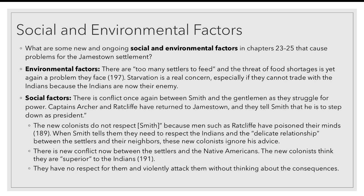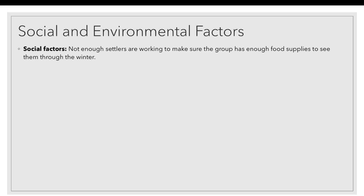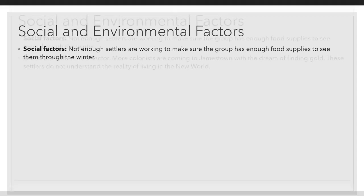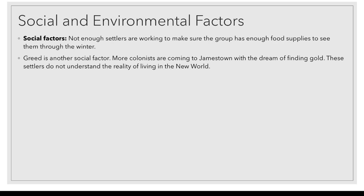This is a huge problem. We talked about the environmental factor that starvation is a real threat. But a social factor is that not enough settlers are working to make sure the group has enough food supplies — they're not working to provide for each other, and that is a social problem. Plain greed is another social factor. More colonists are coming to Jamestown with the dream of finding gold, which, by the way, they have found exactly none of so far. These settlers don't understand the reality of living in the new world — having shelter, food, and peaceful relationships with their neighbors — because they're too focused on getting rich to take care of themselves.